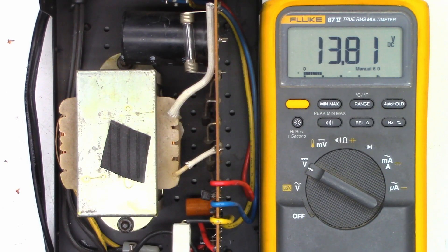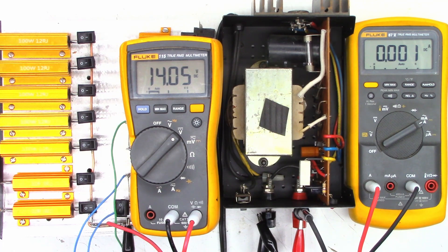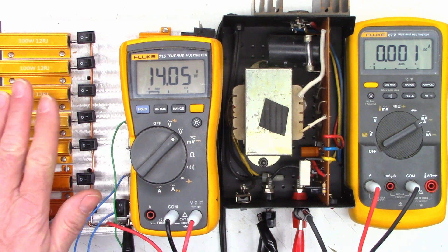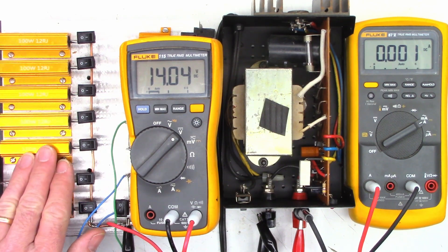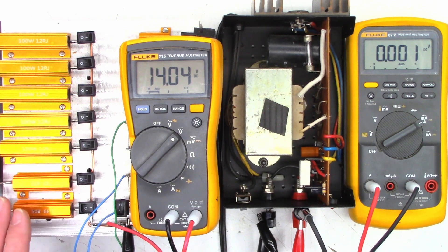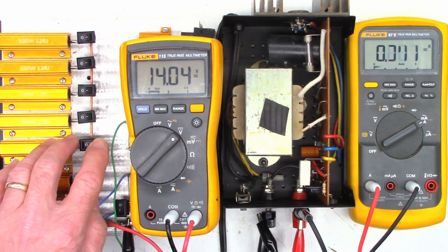So it does do a fairly good job of regulation. Okay, well I've got it fired up here. New fuse in it. So on the 115 fluke meter, I'm measuring 14.05 volts. On the 87 is on the amp range. I've got basically zero amps right now. I've got my dummy load connected right here with my 12 ohm resistors. So each one should pull about one amp.